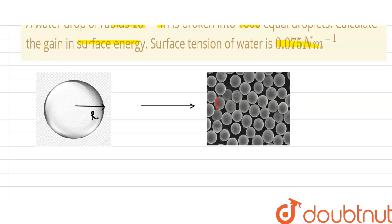So, for this, work has to be done. This work is consumed to increase the surface energy of these bubbles. Now, surface tension is equal to this increase in surface energy divided by the increase in surface area.